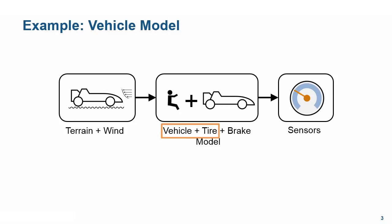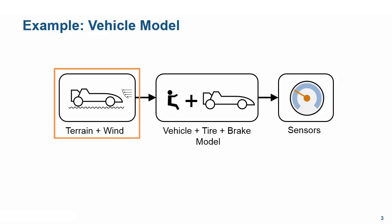We will begin by modeling the frame and tires of the vehicle. Since we are modeling the longitudinal dynamics of the vehicle, we will use a half-car model. This is because the loads are evenly distributed between the left and right wheels. We will then add speedometer and odometer functionality to measure and validate physical quantities. We will also explore how wind and terrain can affect the motion of the vehicle, and finally see how to add a brake model.